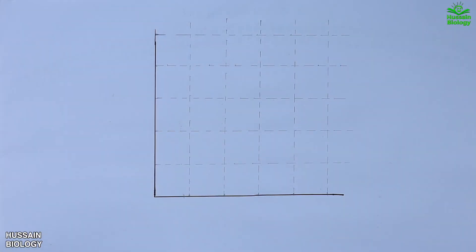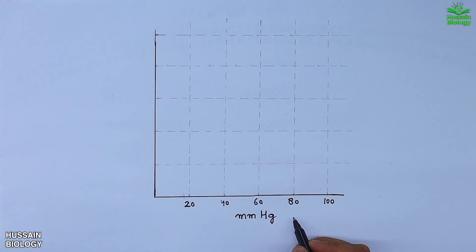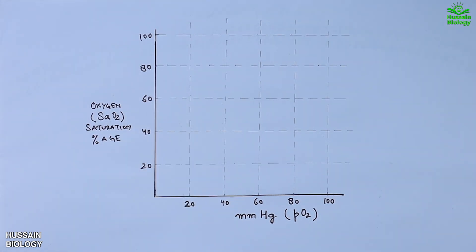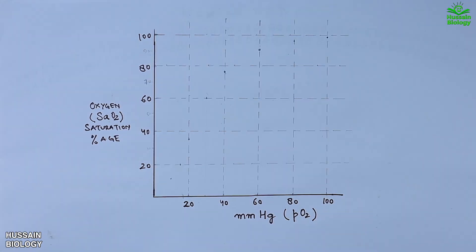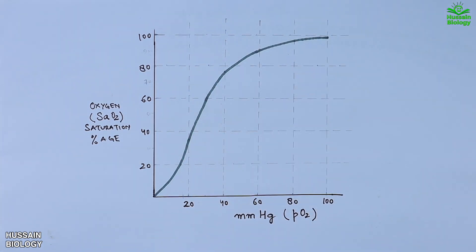Looking at the graph, we have partial pressure of oxygen on the x-axis in mmHg and oxygen saturation percentage — also known as hemoglobin saturation with oxygen — on the y-axis. When we plot the graph it comes out as a sigmoidal curve. We place dots on the observed data points, connect them, and get this characteristic sigmoidal shape.